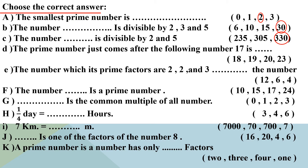Letter D: the prime number just after 17 — is it 18, 19, 20, or 23? After 17 is 18, but 18 is not a prime number. So after 18 is 19. Yes, 19 is a prime number.